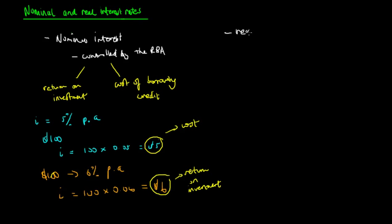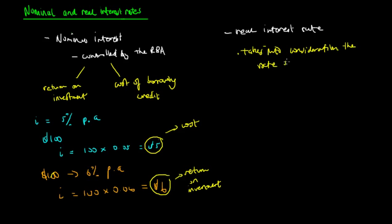The real interest rate is different because it takes into consideration the rate of inflation. Like all real variables, it tells us how much our money is actually worth — that is, our purchasing power. So the real interest rate is our actual return on investment or the actual cost of borrowing credit.